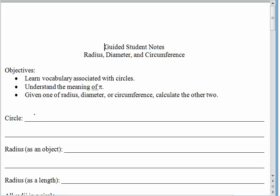Technically speaking a circle is a set of points. So a circle is the set of all points, and circles are flat two dimensional objects. So we talk about the set of all points in a plane that are a given distance from a fixed point.